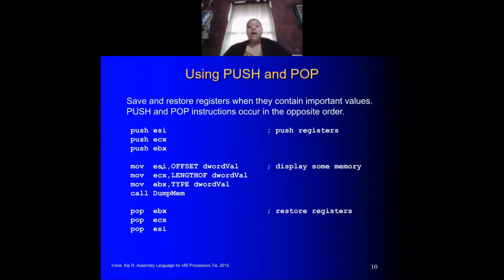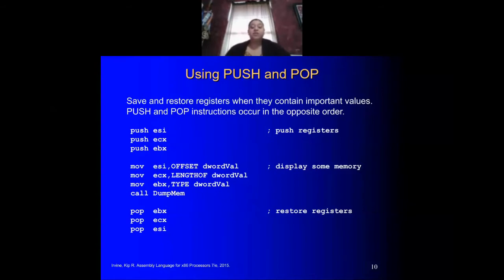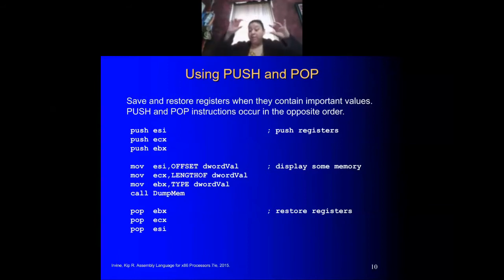After pushing, the program does whatever needs to be done — here we're simply looking at offsets. Then it calls a procedure called dump_memory, which is an external procedure that comes with the book. What dump_memory does is display output to the actual console screen — the little black screen in Visual Studio — and prints out all of the registers.